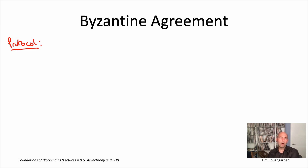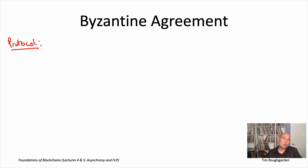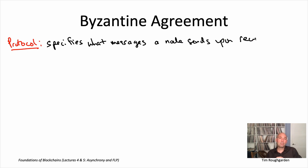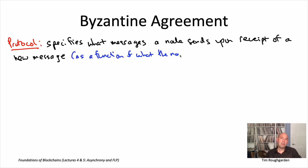A protocol is just a piece of code that honest nodes, by definition, execute faithfully without any deviations. This code is event-driven: something will happen at a node and then it will respond in some way. In the asynchronous model, all we really worry about is messages. So an event at a node is the receipt of a new message, and the protocol specifies what messages the node should send back out.